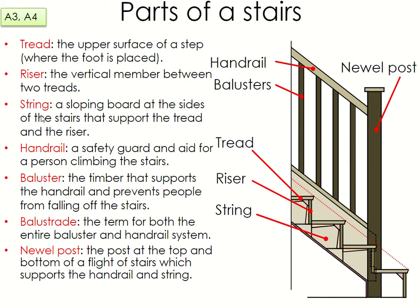The string is the sloping board at the sides of the stairs that supports the tread and the riser. We'll look at that in more detail later — it's just the part on the side. The handrail is obviously the part you put your hand on; it's a safety guard and an aid for a person climbing the stairs. The balusters are the parts in between the handrail and the actual stairs — the timber that supports the handrail and prevents people from falling off.